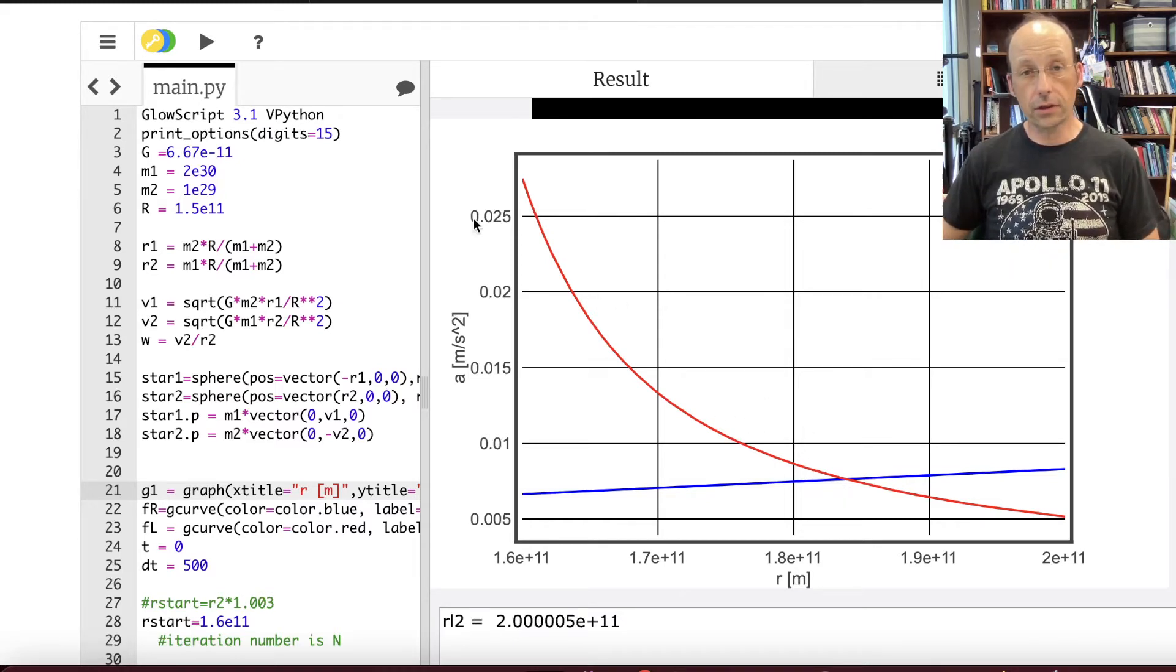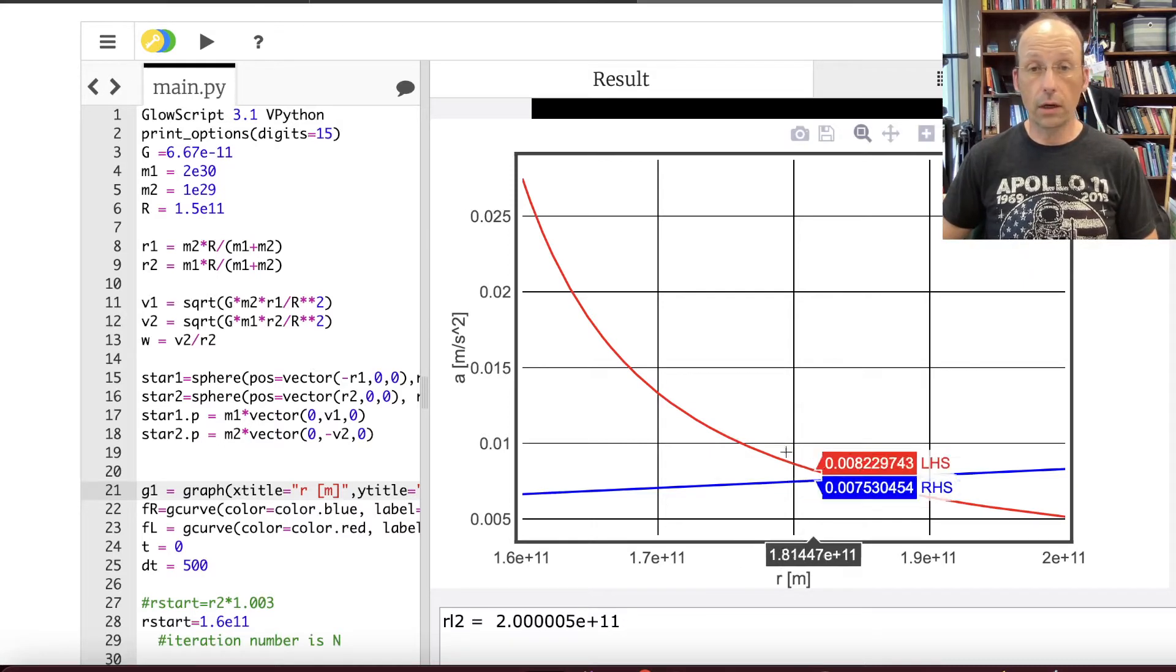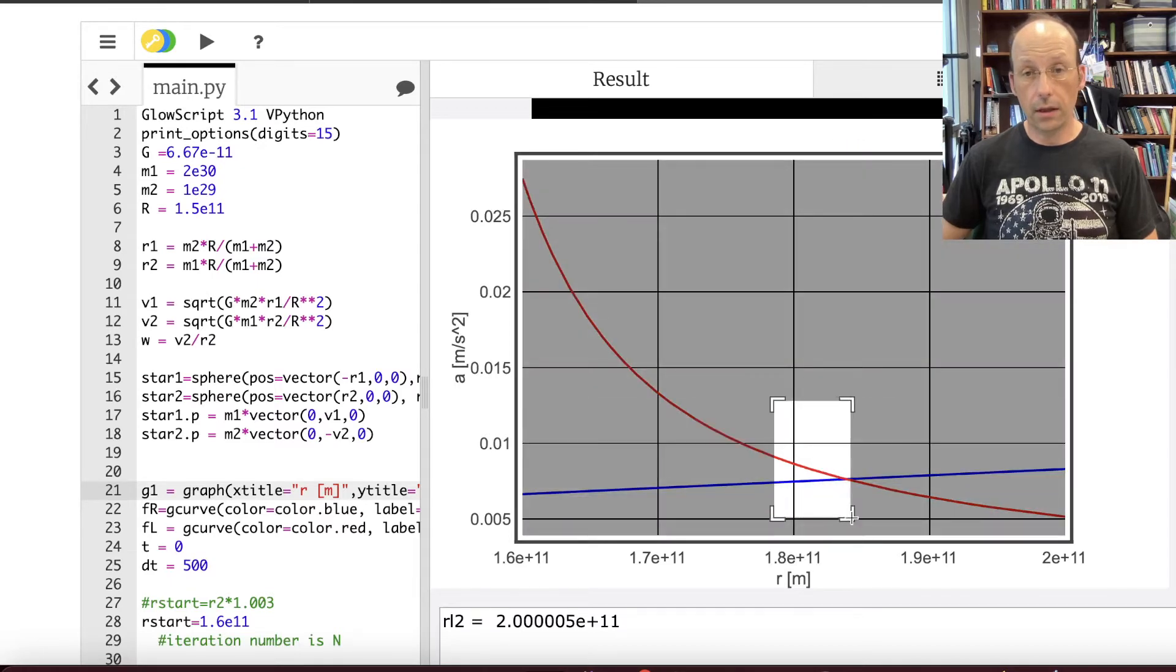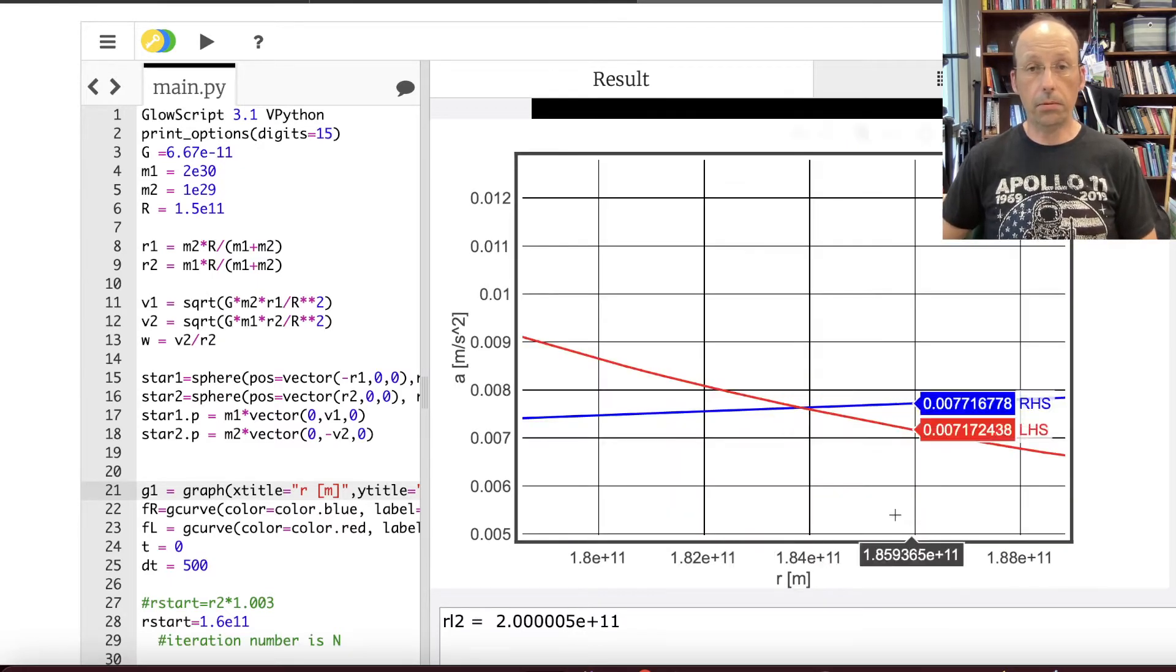So look at this. Here's the function. This is zoomed in to where approximately they cross. What if I zoom in even more? So I can do that with this because I'm using a plotly graphing.